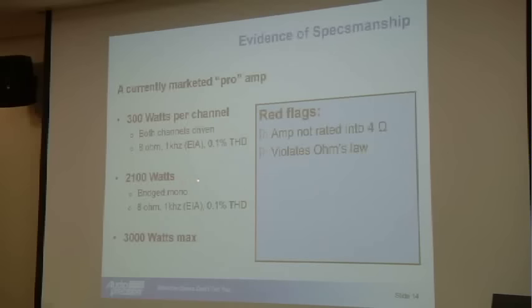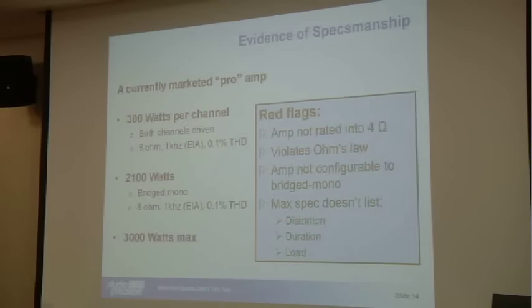First one is, the amp wasn't even rated into four ohms, so how did it do bridge mono into eight? And 2,100 violates Ohm's law. It should be 1,200 into bridge mono. But that's just a convenient transposition of the one and the two. But then I asked to look at the manual, and the amp wasn't even configurable into bridge mono. They eliminated the bridge mono spec from future specs. They still quote the 3,000 watts max. And normally when I see those kind of numbers, there's a three letter acronym, WLS, that should be on the spec. That stands for when lightning strikes.